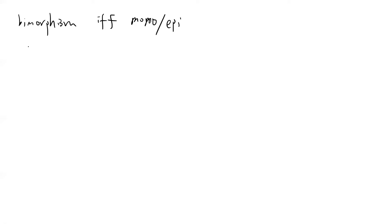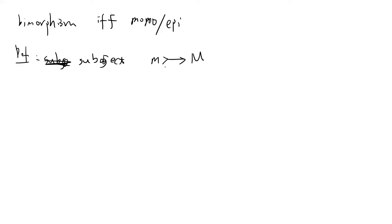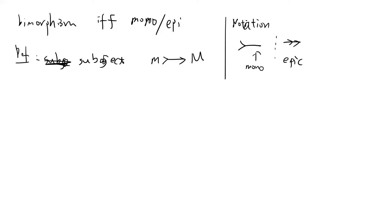Now there is also an important concept called the sub-object. A sub-object: if you have an object M and a larger object M, and you have a monomorphism from M into M — using the notation where the hooked arrow denotes a monomorphism and the two-headed arrow denotes an epimorphism — then M is called a sub-object.